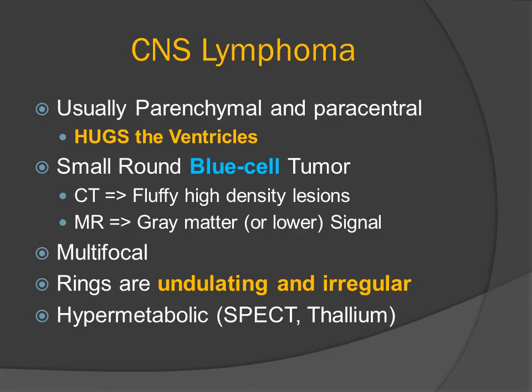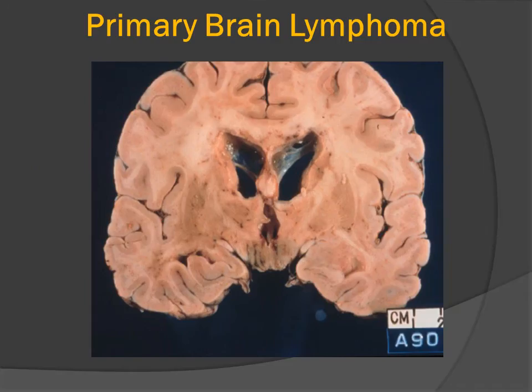One of my colleagues calls this 'rimfoma' because it forms a rim around the ventricular system. So CNS lymphoma is usually parenchymal, paracentral, hugging the ventricles — a small, round, blue cell tumor. It can be multifocal, and when it creates a ring-enhancing lesion, the rings may be irregular and have a wavy or undulating margin. We can also do special metabolic studies, including SPECT, thallium, and FDG studies, in order to demonstrate the increased metabolism of this neoplastic process.